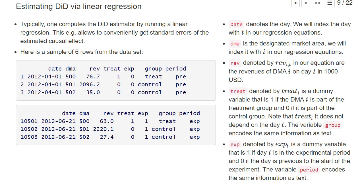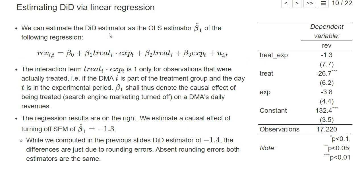Concretely, we can estimate the difference-in-differences estimator as the OLS estimator beta-one-hat of the following regression. The dependent variable is the revenues for each DMA on each day, explained as a constant plus beta one, an interaction effect of whether the DMA is in the treatment group (treat_i) and whether we are in the experimental period (exp).